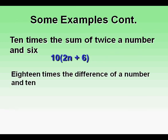18 times the difference of a number and 10. This translates to 18 times the quantity n minus 10. Note that immediately after the words difference of, what is next, the n minus 10, goes inside parentheses.